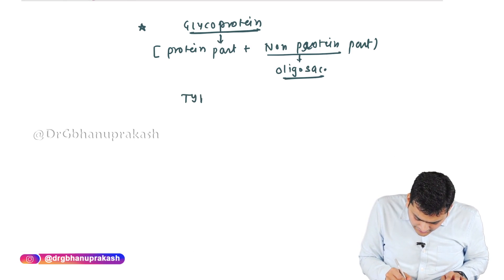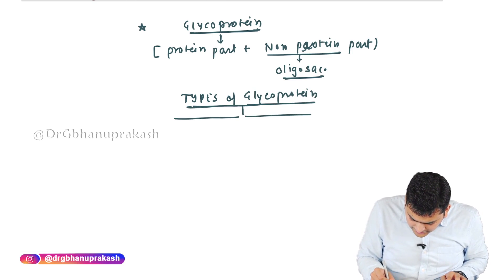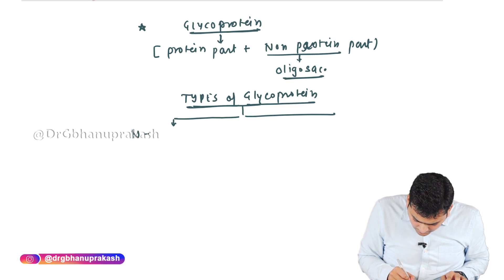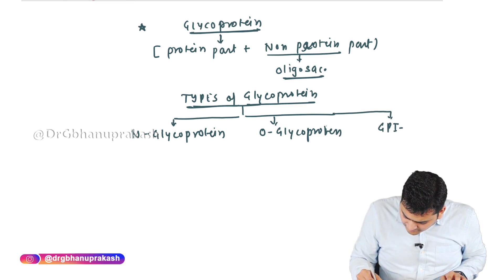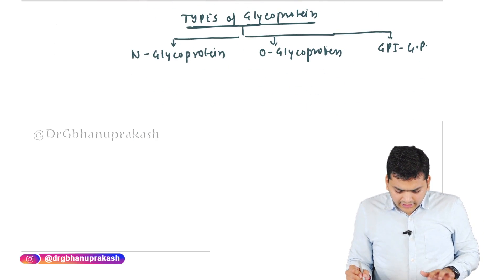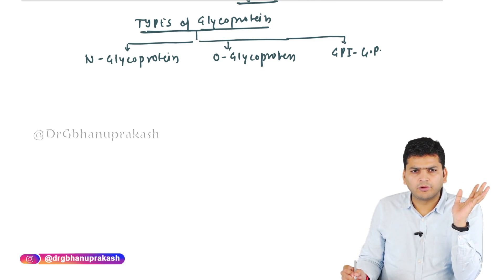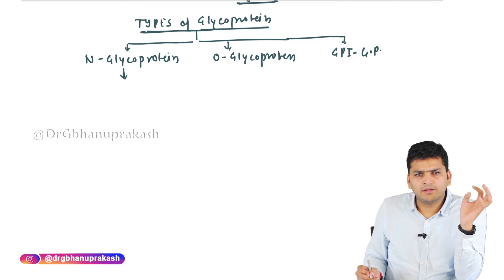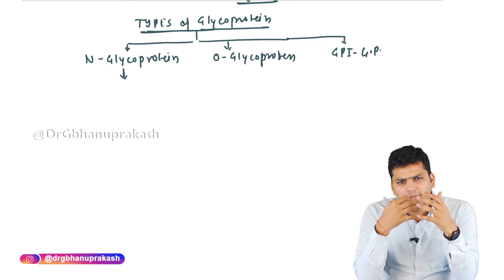When it comes to the types of glycoprotein, glycoprotein is basically divided into three types: the N-type of glycoprotein, the O-type of glycoprotein, and the GPI-type of glycoprotein. Depending on where you are adding the carbohydrate on the protein, we divide it into these subcategories.